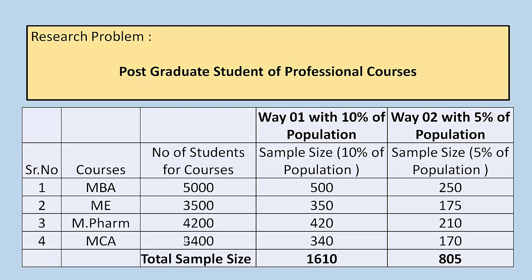Let us take the MBA row as an example. The number of students is 5000. If the researcher considers 10% of the population, the sample size is 500. Similarly, for ME students the sample size is 350, for MFARM it is 420, and for MCA it is 340. If we take 10% of the total population, the total sample size is 1610.